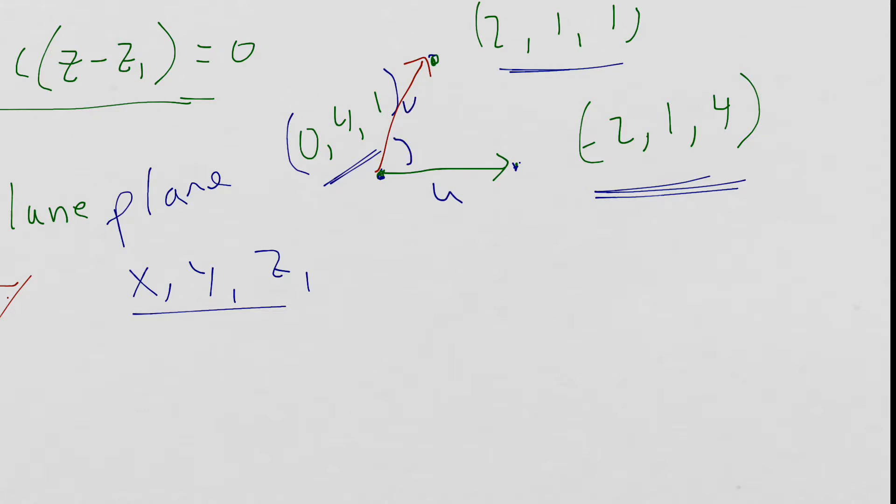right, then I get what's called their cross product. And that cross product is orthogonal to both of these vectors, which also makes it a normal vector for this plane. Okay? So we need vector U and vector V. We're going to take the cross product of those two, and that will equal our A, B, and C.